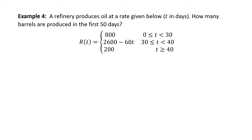Example: a refinery produces oil at a rate given by R of T (T in days). How many barrels are produced in the first 50 days? R of T is a piecewise defined function: 800 for T between 0 and 30 (30 not included); 2,600 minus 60T for T between 30 and 40 (40 not included); and 200 for T equal to or greater than 40. We will have three separate integrals.